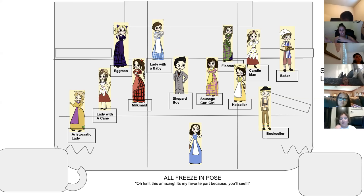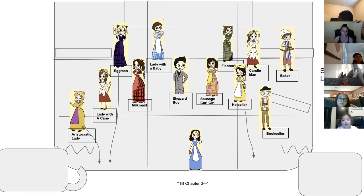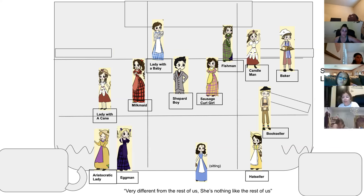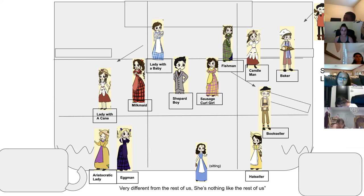After she sings 'here's where she meets Prince Charming,' we switch our pose. Maybe I'm looking at Hat Seller and offering an egg, then I look at Bookseller and make a silly face. On 'till chapter three,' Aristocratic Lady and Hat Seller, come into your proper zones. Egg Man, wait a little bit until after Hat Seller's solo. First we have Aristocratic Lady: 'her looks have no parallel.' Hat Seller: 'behind her facade.' That's when Egg Man needs to come in and stand right next to Aristocratic Lady, because her solo is very different from the rest.